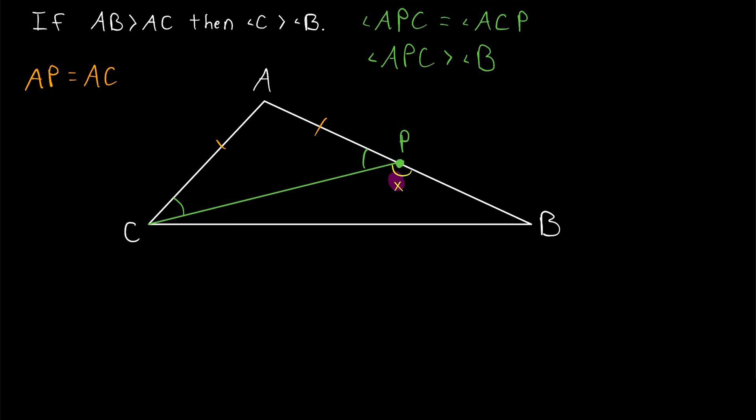But these two angles, X and the exterior angle APC are supplementary. They fall on a line, which means they also add to 180. Since adding X to this angle gives us the same thing as adding X to these two angles, the measure of this angle has to equal the sum of these two angles. And so it's certainly greater than either one of them individually.